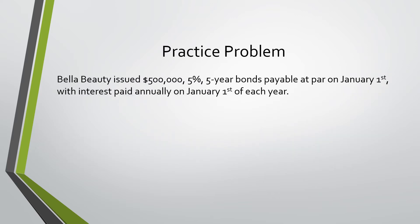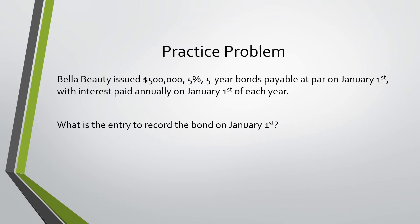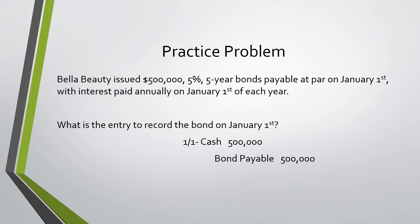In this example, Bella Beauty issued a 500,000, 5%, five-year bonds payable at par on January 1st, with interest paid annually on January 1st of each year. What is the entry to record the bond on January 1st? We would debit cash for 500,000 and credit bonds payable for 500,000.